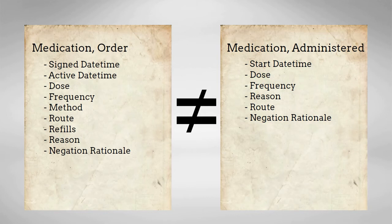The medication order QDM data type has attributes to record the date and time the order was signed, the date and time when the record is to become active, what dose, frequency, method, and route the order indicates for the medication, the number of refills.